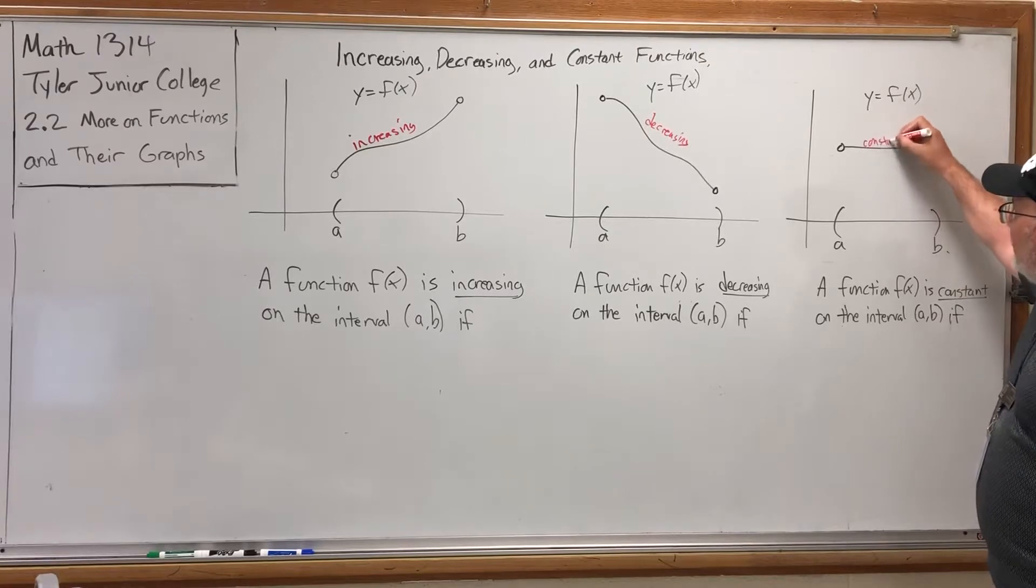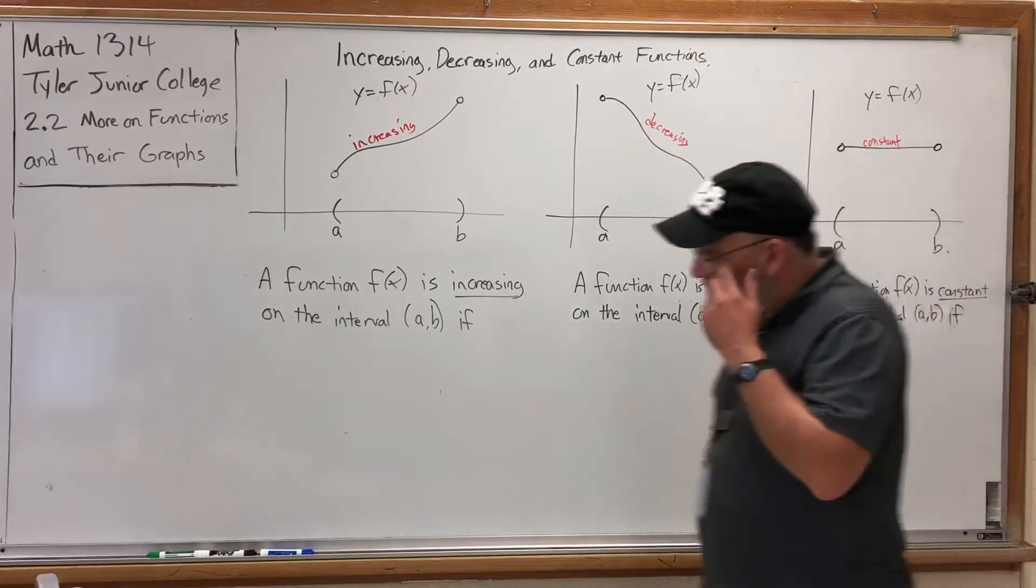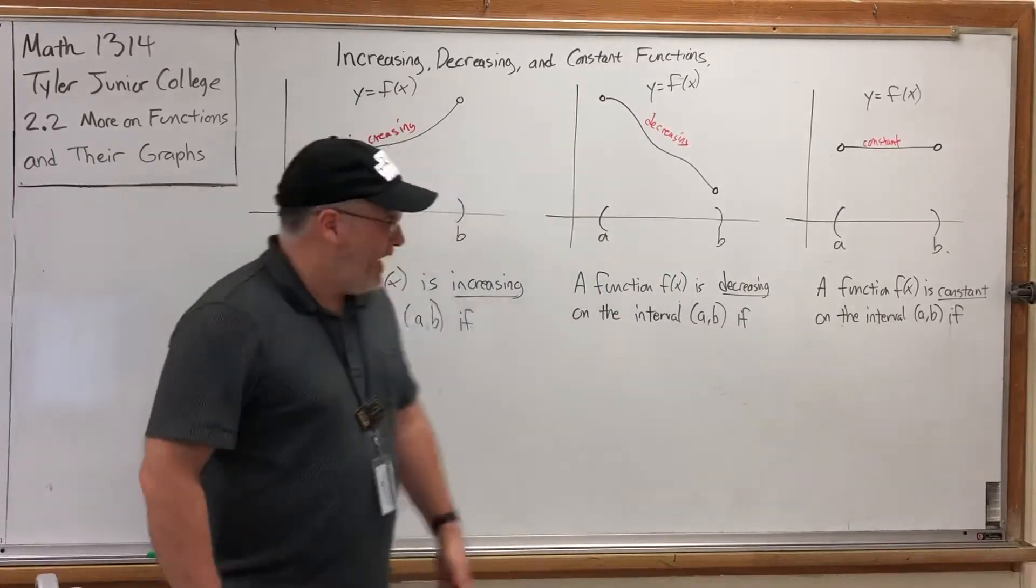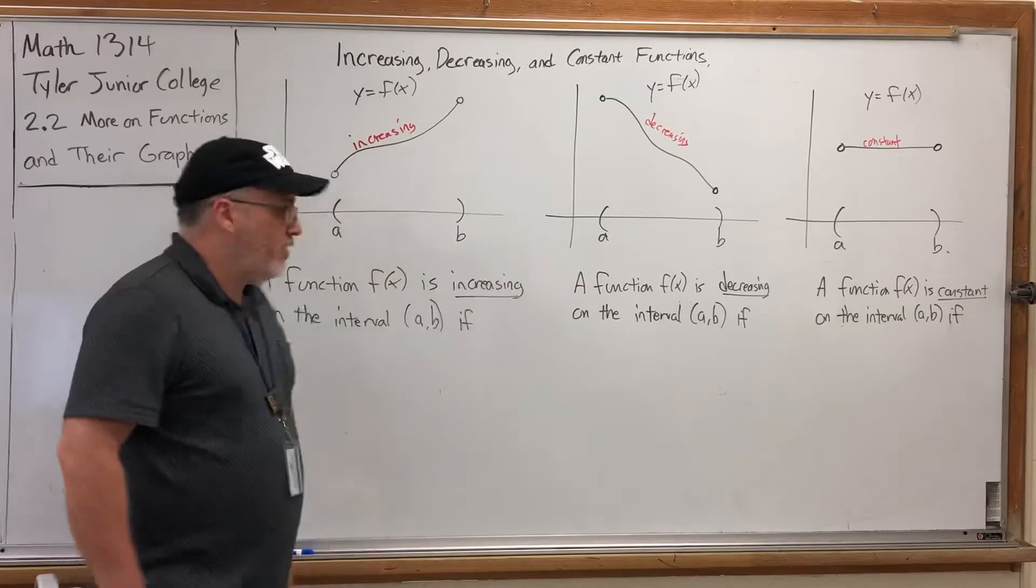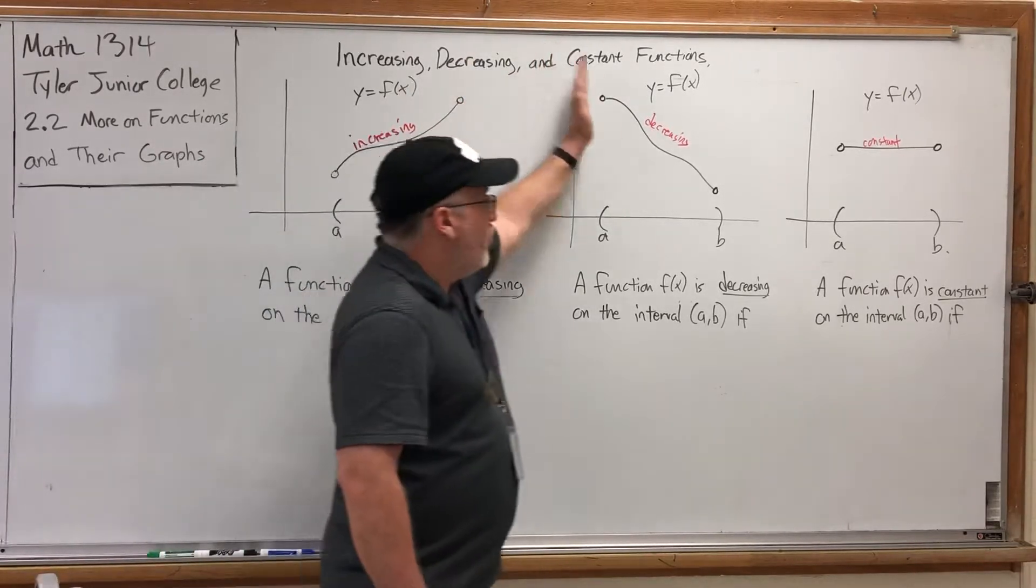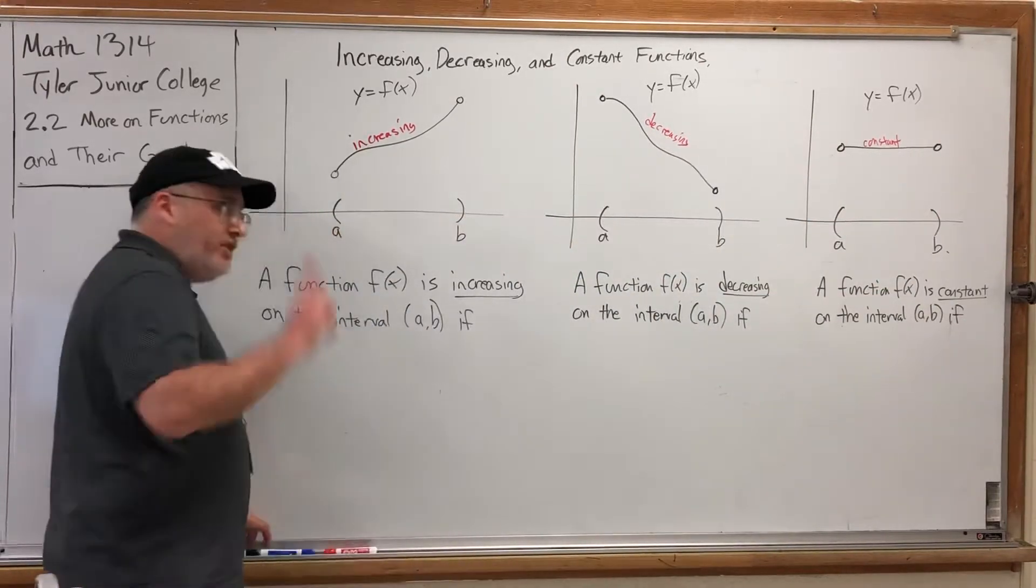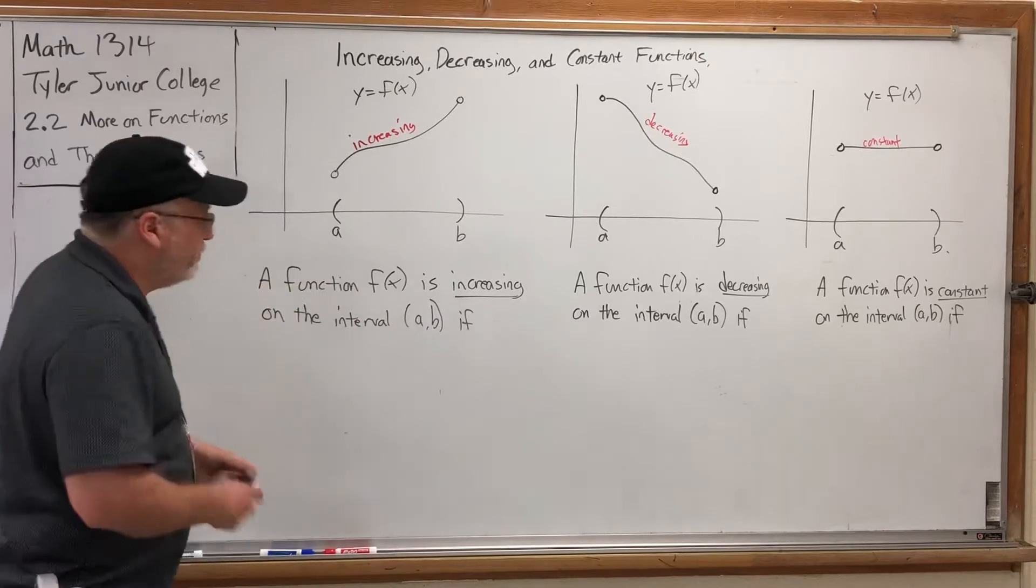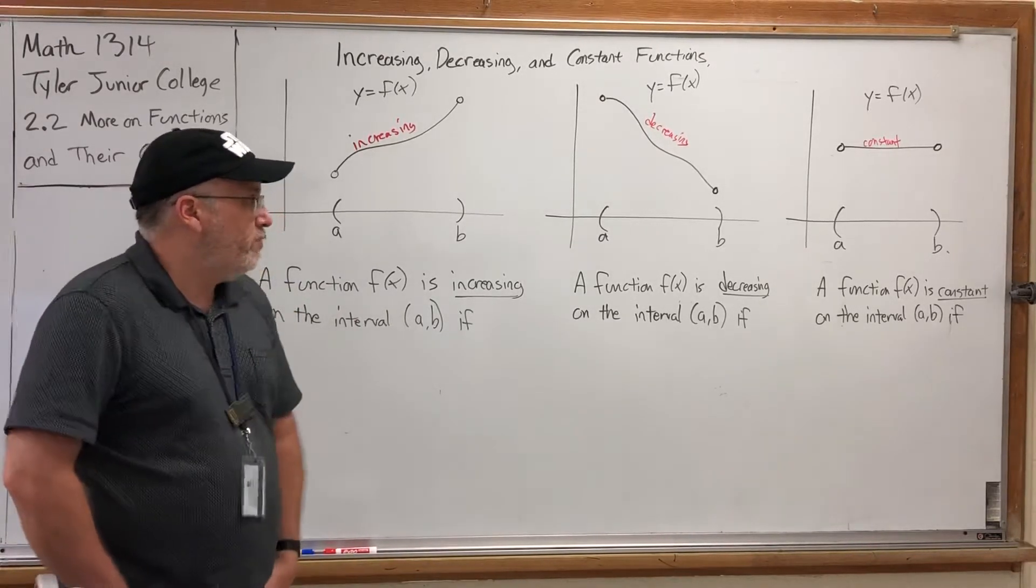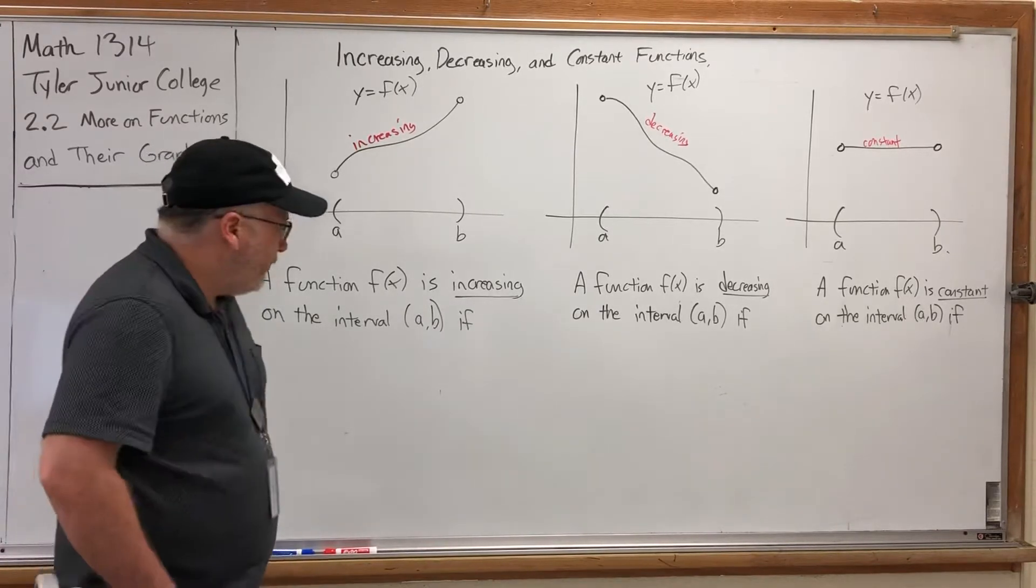The third graph is staying horizontal as we move from left to right, so this graph is called constant. The adjectives increasing, decreasing, and constant are describing what the y values are doing as we move from left to right on the graph. So from left to right, y values are getting higher or lower or they're remaining constant.